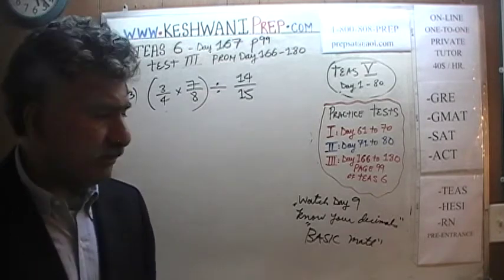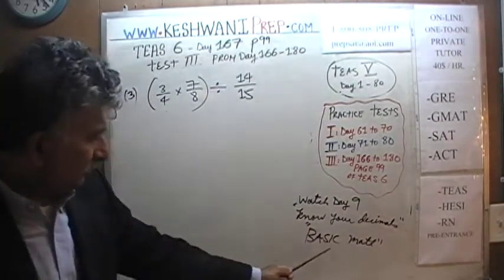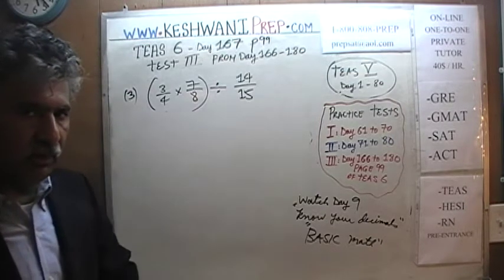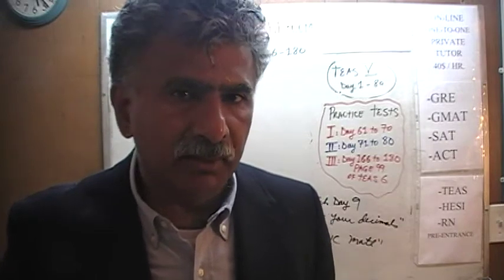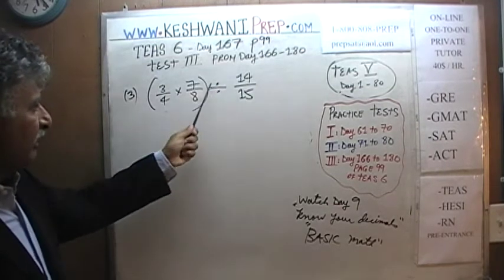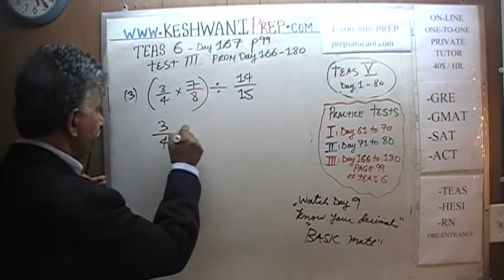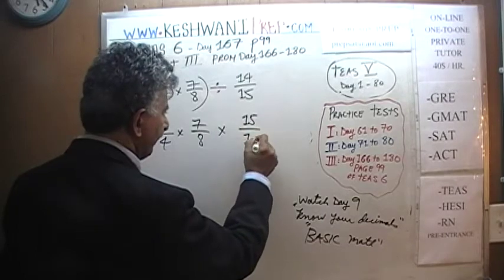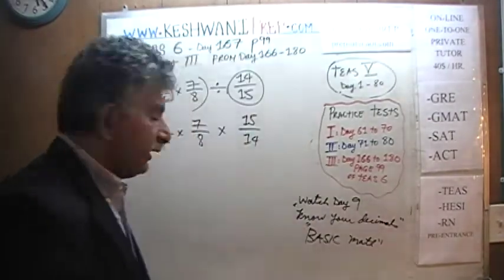First thing first — if you are not very good at this, you will find that we have solved many problems like this from day 1 through 80. There is also a basic math series; just type in 'basic math day 1' — there are 100 videos in that series where you will learn how to add, subtract, divide, and multiply fractions. Now, we know that if a quantity is being divided by a fraction, we can convert that division sign into a multiplication sign by taking the reciprocal of the fraction. So 14 over 15 becomes 15 over 14 — we just flip it — and now we are ready to multiply out.